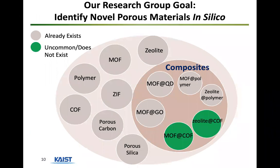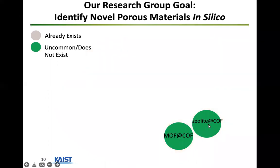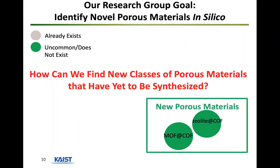One research goal in our group is to create new porous materials in silico to facilitate materials development, relay this information to experimentalists, and hopefully synthesize useful materials faster. We looked into different classes of porous materials and concentrated on groups that have yet to be synthesized. We created this diagram around 2015–2016 and concentrated on different types of porous materials we can create in silico, including MOF-COFs and zeolite-COFs which were not common, to see whether we could create these new porous materials inside the computer.